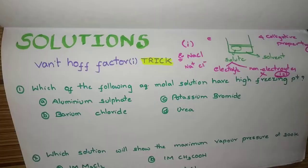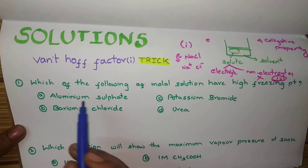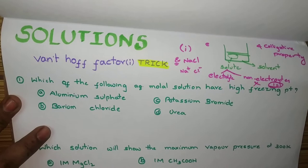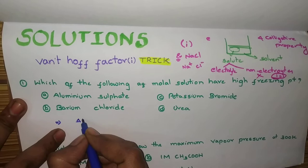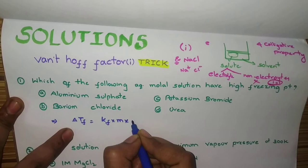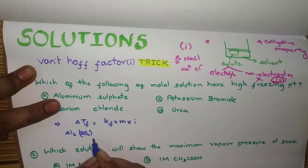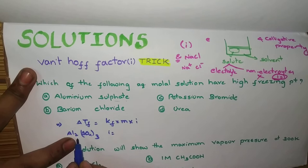Please read the first question. They asked, which of the molal solution have high freezing point? High freezing point is a colligative property. You also need to know the colligative properties formulas. Freezing point, Delta T_f is equal to K_f into molality into multiply the Van't Hoff factor in case of electrolytes. See. Aluminium sulfate. Al2(SO4)3. So, for this, i will be, it will dissociate. 2 plus 3. 5. That's it.